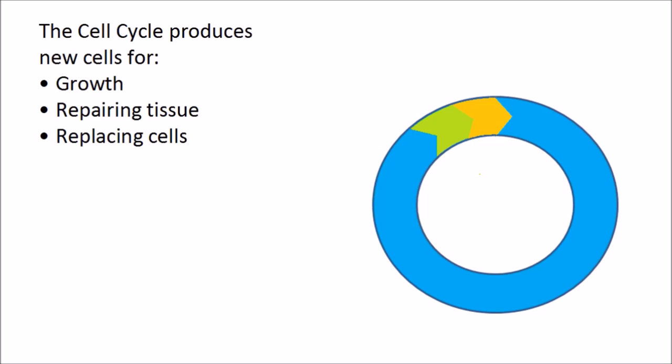So the cell cycle is a process by which a cell can divide to form two identical cells. Every day we need to produce new cells and this could be for growth, it could be because we have suffered some kind of tissue damage, and it could be because our cells need replacing because they're old and have died.